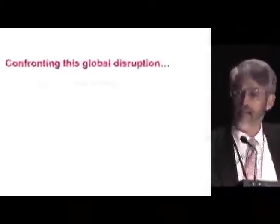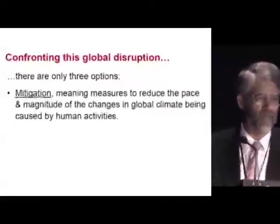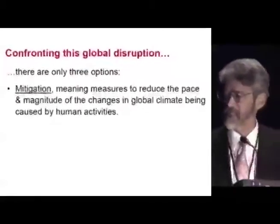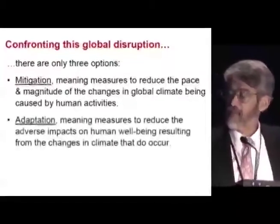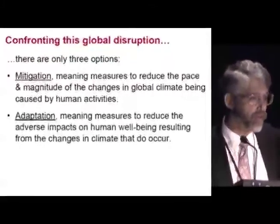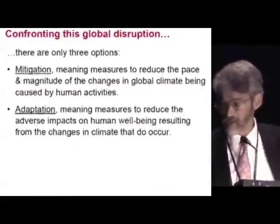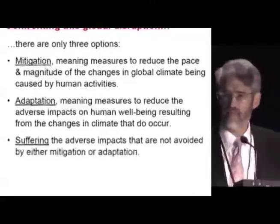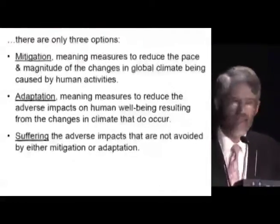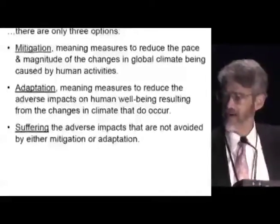Confronting this disruption of global climate, we really have only three options. One is mitigation — measures you take to reduce the pace and magnitude of changes in global climate that we're causing. The second is adaptation — measures you take to reduce the adverse impacts on well-being that result from those changes in climate. And the third is suffering. It's that simple.